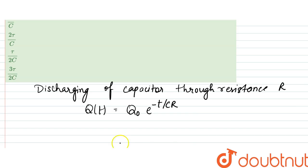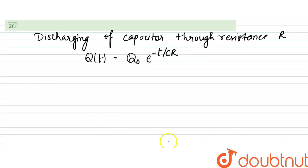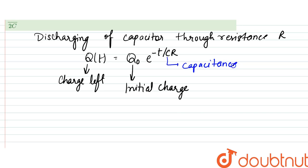So that would be the amount of charge after time t. This is the charge left, initial charge. t is time, C is the capacitance, and R is what we have denoted, that is the resistance.